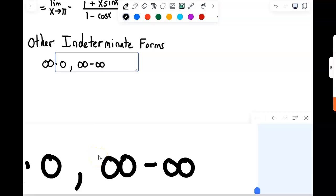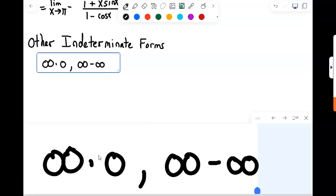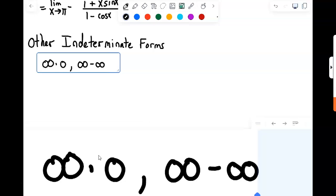All right, so now we want to turn our attention to other indeterminate forms. Specifically, we're going to focus on these two now: infinity times zero and infinity minus infinity.